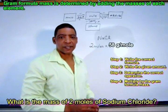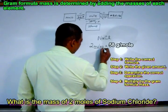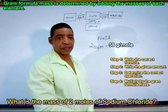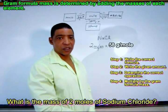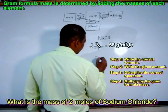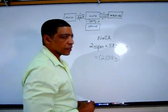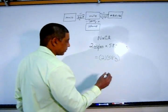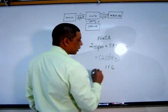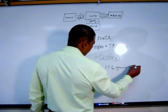Using unit cancellation, we write two moles over one — remember, every number is a fraction written over one. The moles will cancel, and the answer is two times 58 grams, which equals 116 grams of NaCl.